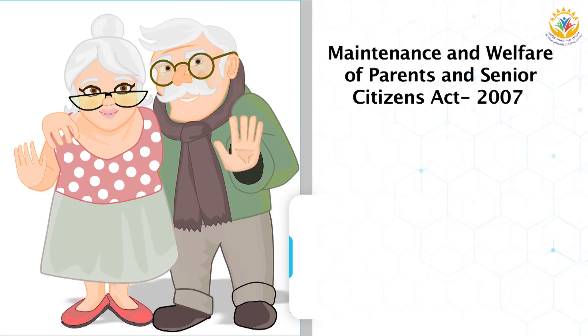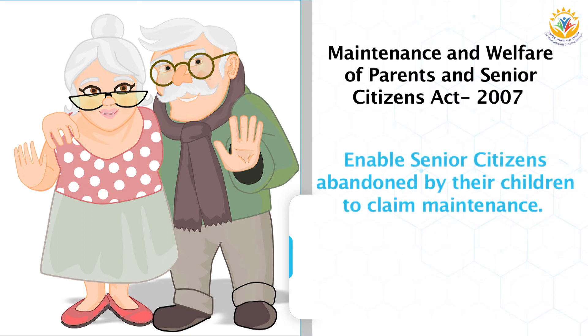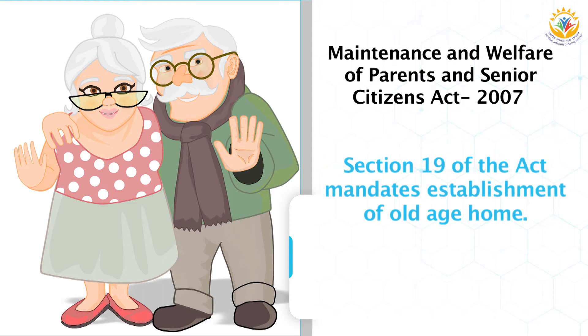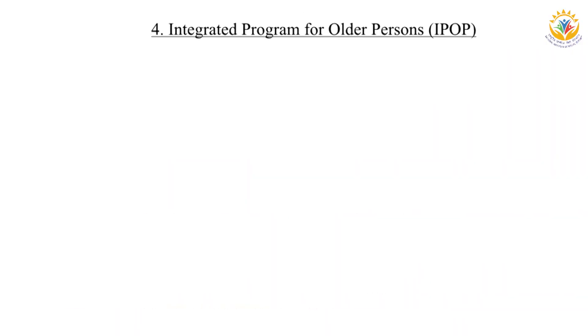The Maintenance and Welfare of Parents and Senior Citizens Act was passed in 2007 to enable senior citizens abandoned by their children to claim maintenance. The act established maintenance tribunals to provide speedy and effective relief to elderly persons. Section 19 of the act also mandates the establishment of an old age home in every district and provides for the protection of life and property of the elderly.